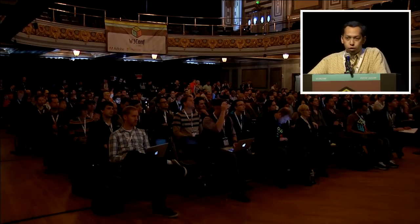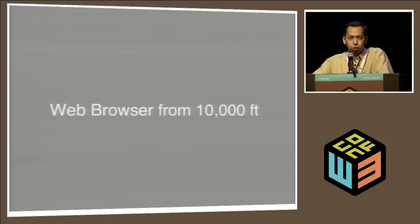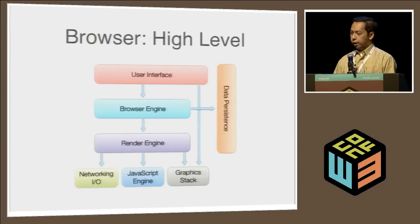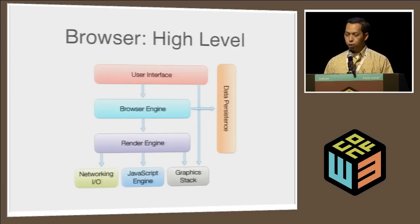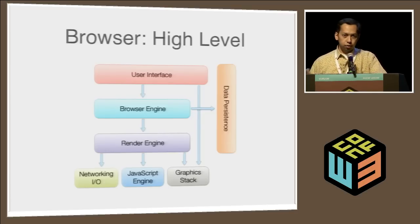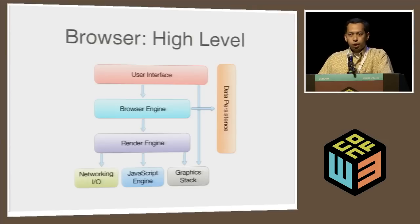Speaking about hardware acceleration in a web browser, we need to quickly refresh how a web browser works — this is just a 10,000-foot overview. A web browser is a complicated beast. Probably the first module is networking, responsible for pulling bits and pieces from the network server. All that content gets fed to the rendering engine, and if there's JavaScript application logic, the JavaScript engine kicks in. But at the end of the day, what you want from a web browser is that it transforms web content into pixels on the screen — and this is delegated to something called the graphics stack.